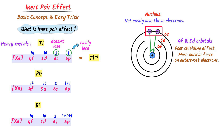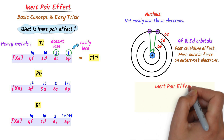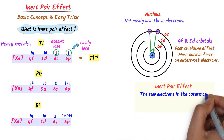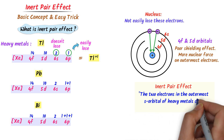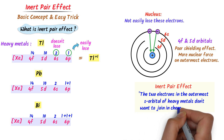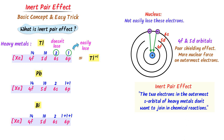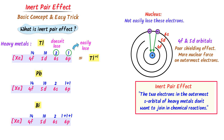This whole credit goes to the poor shielding effect of the 4f and 5d orbitals. Hence, this inertness of the two electrons in the 6s orbital is known as the inert pair effect. We define inert pair effect as: when the two electrons in the outermost s orbital of heavy metals do not want to participate in chemical reactions, this effect is called the inert pair effect.